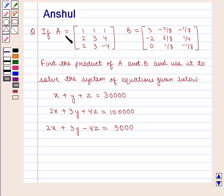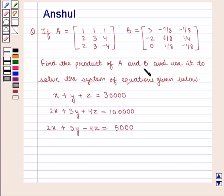If A is equal to the 3×3 matrix containing elements 1, 2, 2, 1, 3, 3, 1, 4, minus 4. B is equal to the 3×3 matrix containing elements 3, minus 2, 0, minus 7/8, 6/8, 1/8, minus 1/8, 1/4, minus 1/8. Find the product of A and B and use it to solve the system of equations: x + y + z = 30,000; 2x + 3y + 4z = 100,000; 2x + 3y − 4z = 5,000.